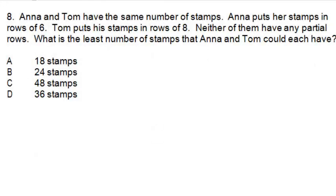Number 8 says: Anna and Tom have the same number of stamps. Anna puts her stamps in rows of 6. Tom puts his stamps in rows of 8. Neither of them have any partial rows. What is the least number of stamps that Anna and Tom could each have?